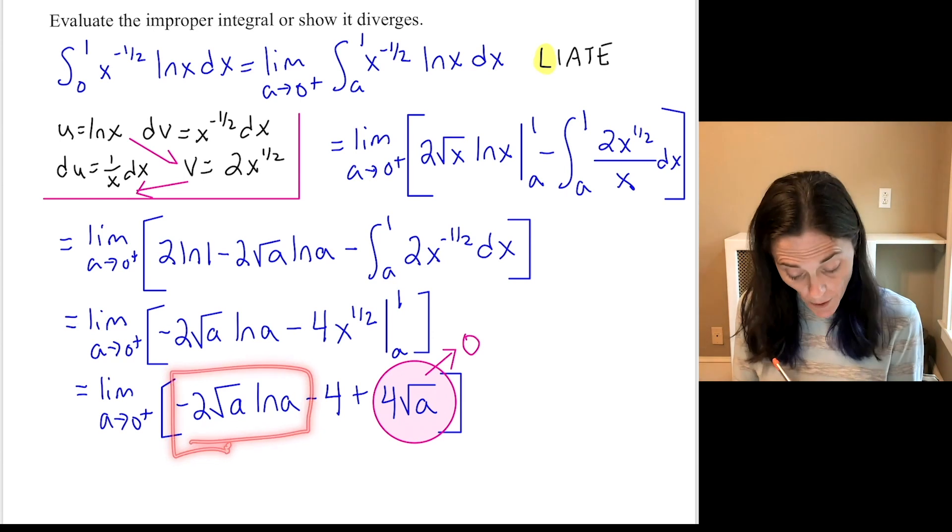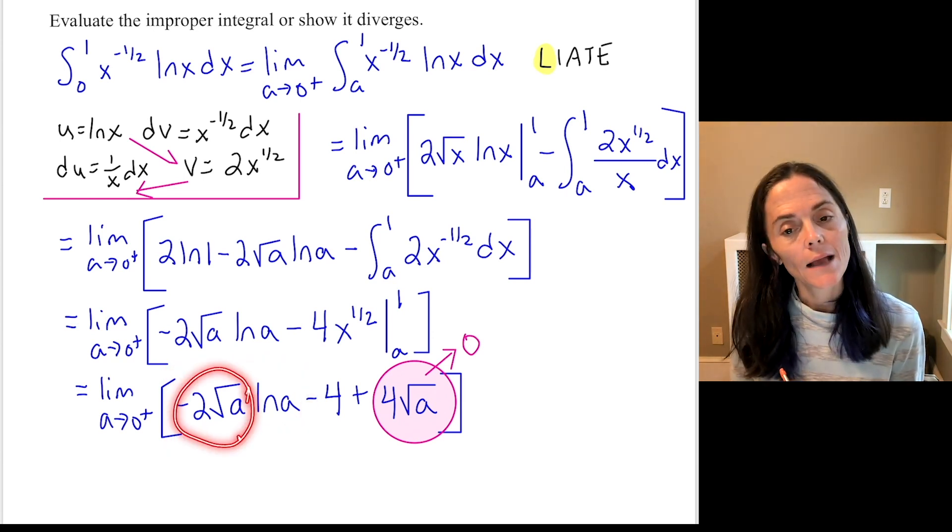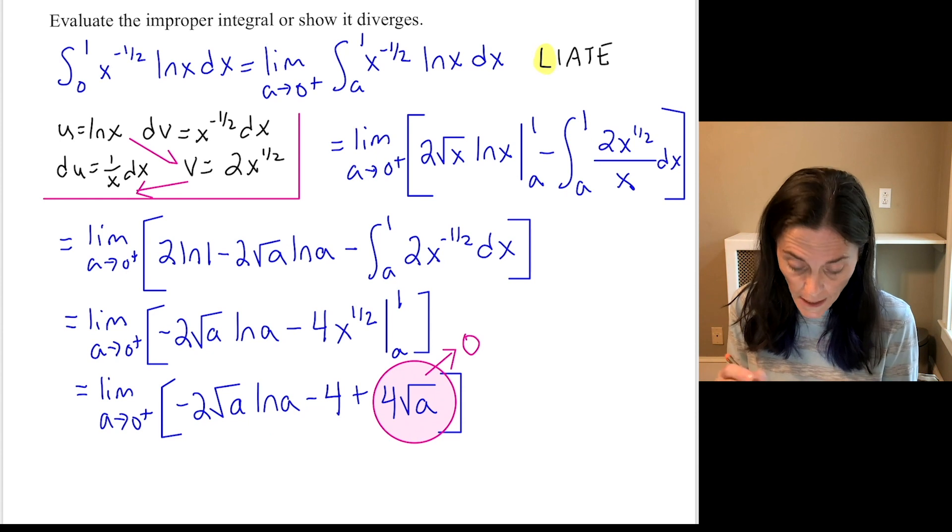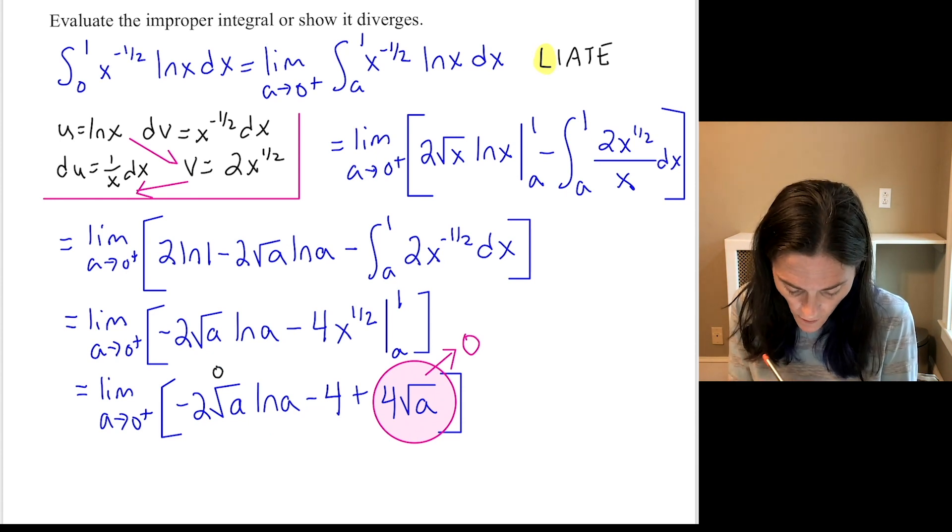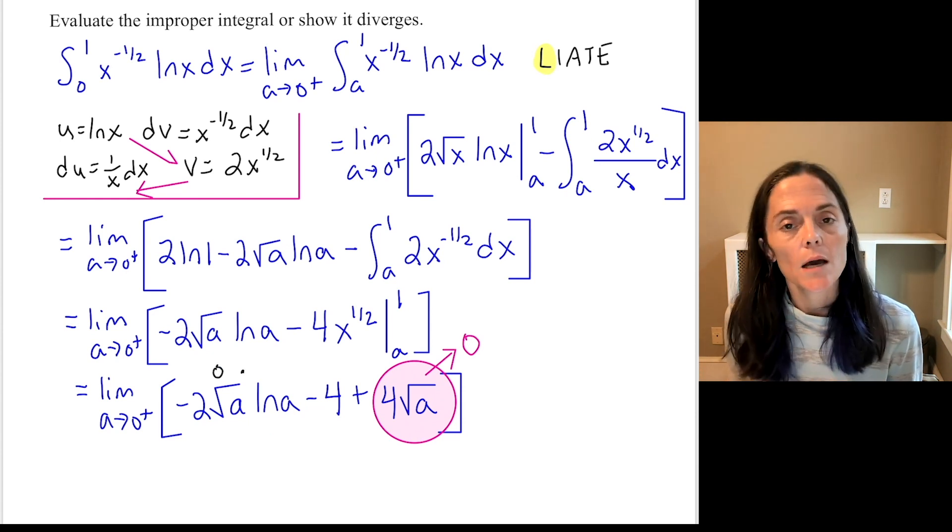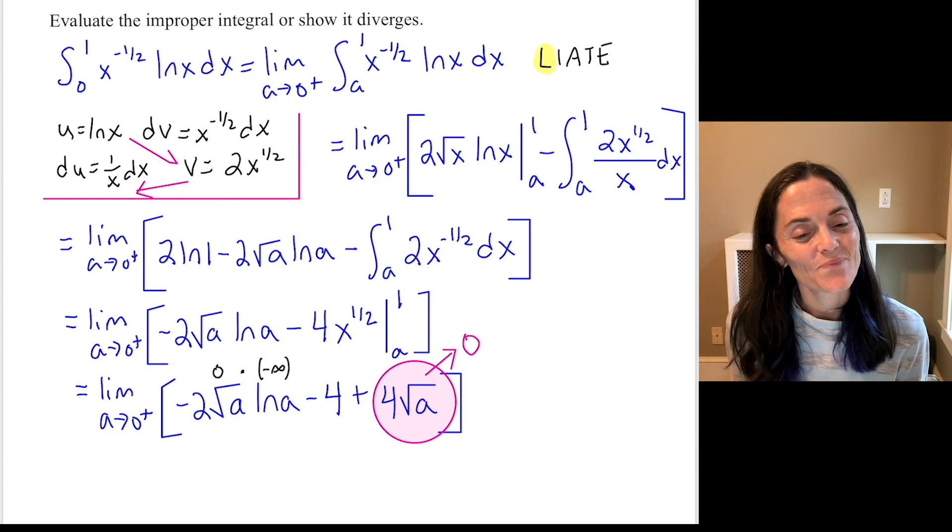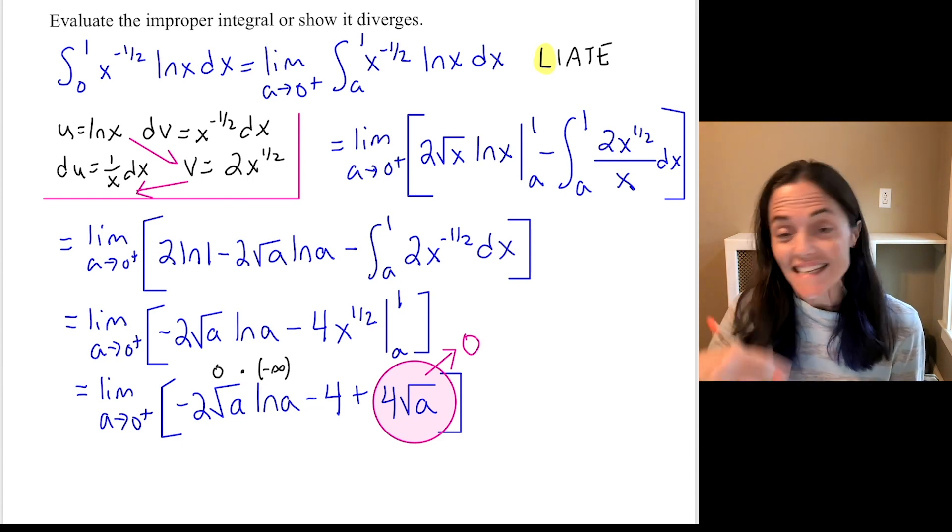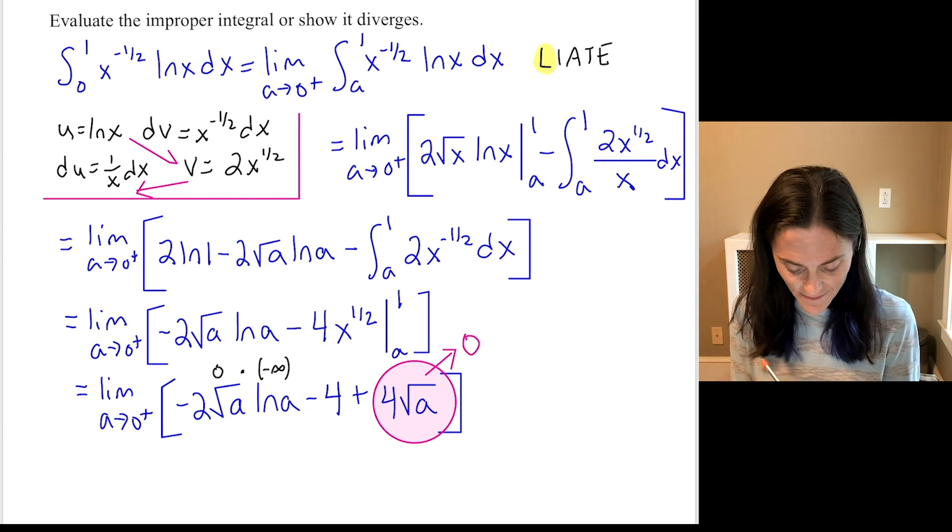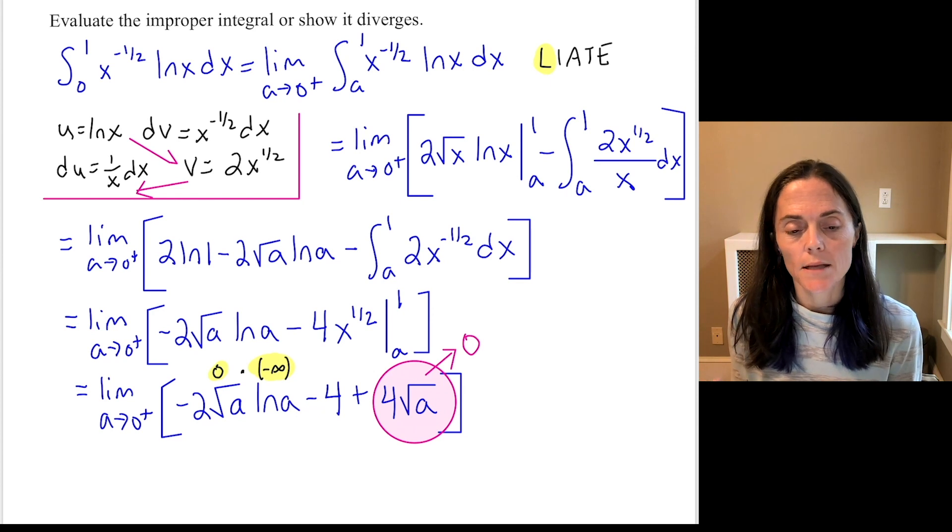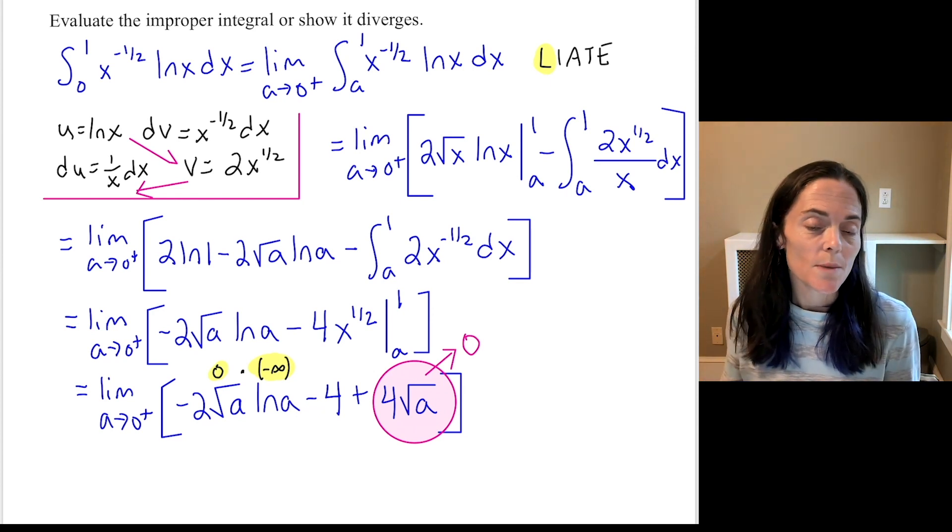So this part minus 2 square root a. This is approaching 0 as a approaches 0. But you see natural log. So let's write above what's happening. This one approaches 0. The natural log of a approaches negative infinity as a approaches 0. Coming from the right. Now, 0 times minus infinity. That does not mean that the limit exists. It does not mean that the limit does not exist. This is indeterminate. And so what that says is we need to do something else.